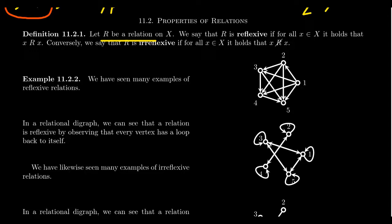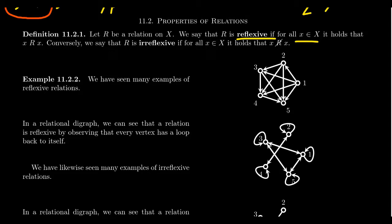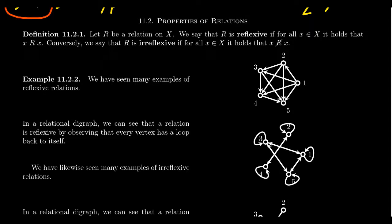In all of these examples, we consider relations from a set back onto itself, so R is a relation on the set X. We say that R is reflexive if for all elements X inside the set, it holds that X is related to X — every element is related to itself. The antonym of reflexive is irreflexive: R is irreflexive if for every element X, it holds that X is not related to X.